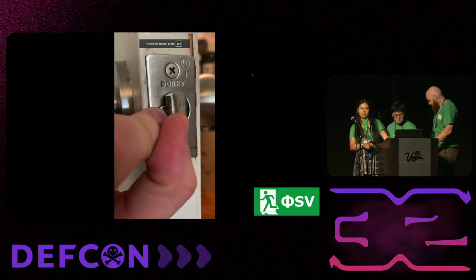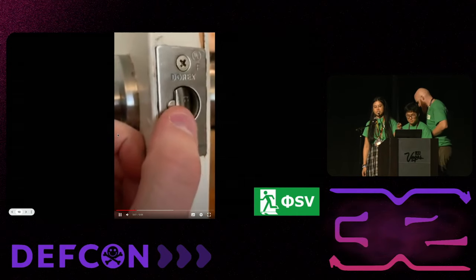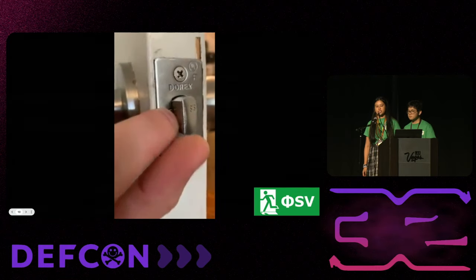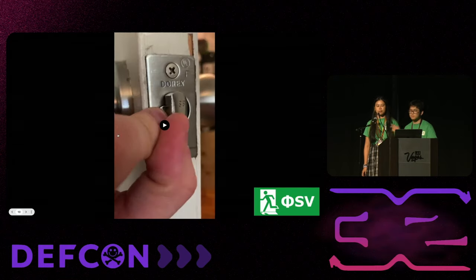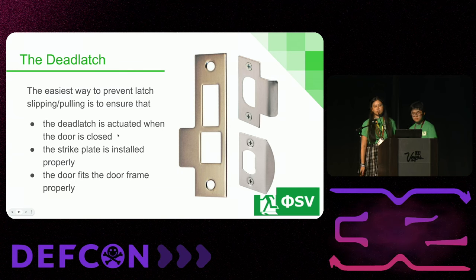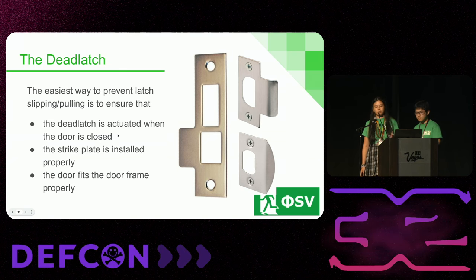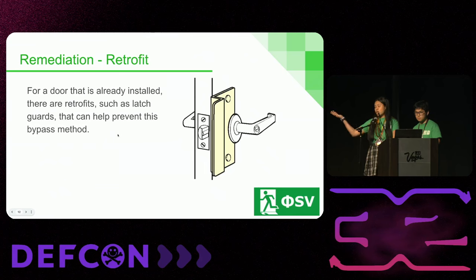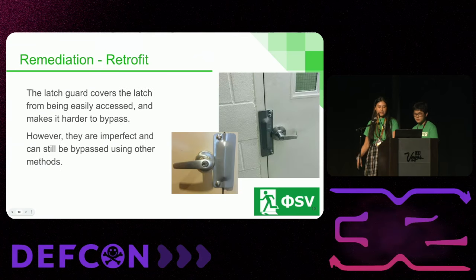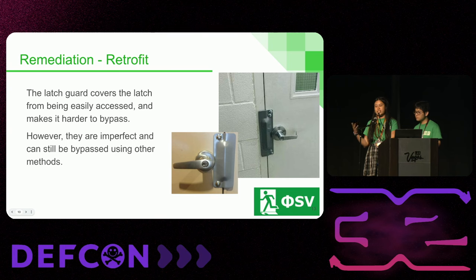So there's the latch, and that little half-moon shape is what's called the dead latch. When it's pushed into the door, it actually prevents the latch from being able to be pushed in, thus stopping that exploit. The easiest way to prevent this is just to install your door properly and make sure that the dead latch is actually being pushed in when the door is closed. Usually on red team engagements, I look out for these kinds of covers because it means that latch is vulnerable to attack.